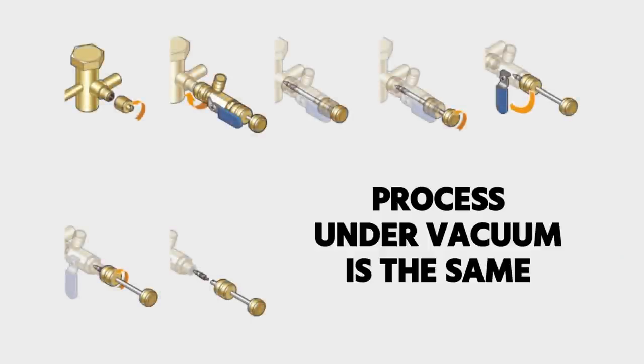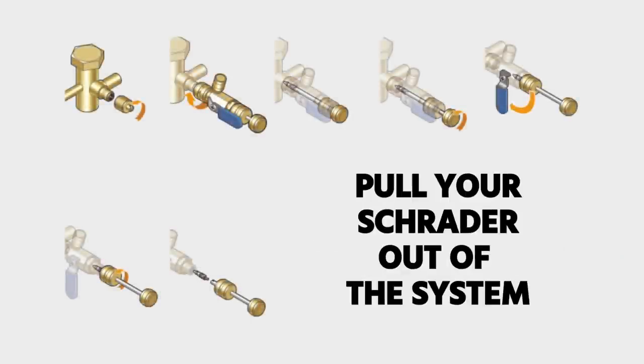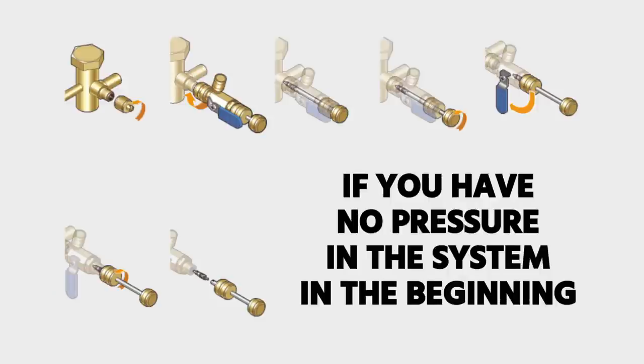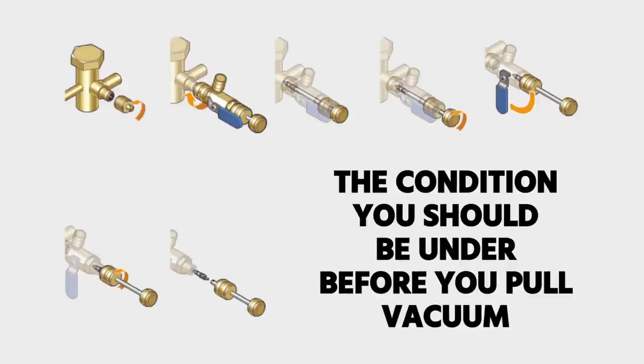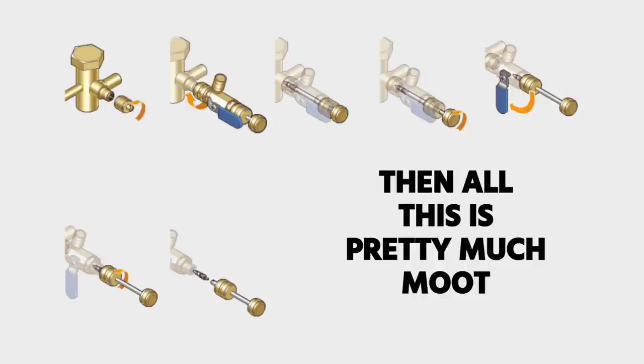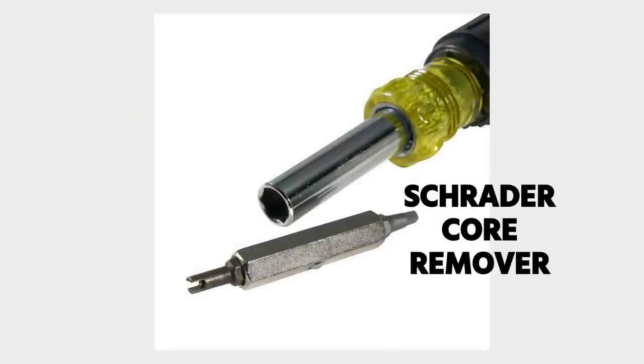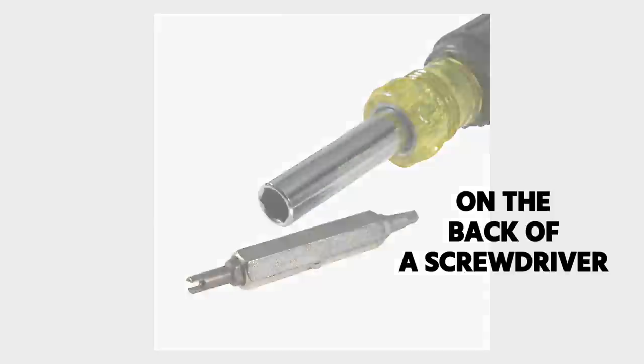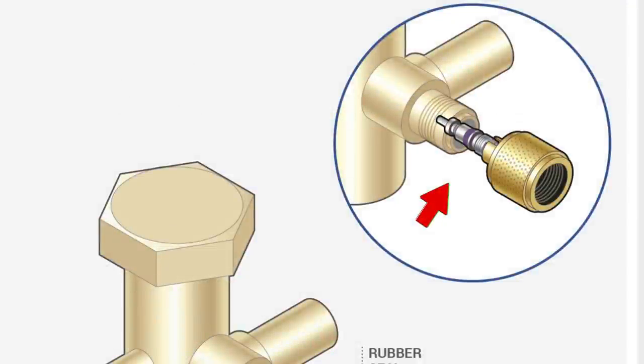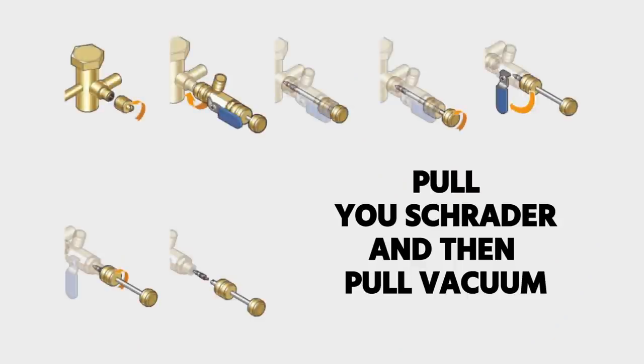The process under vacuum is the same. You're going to pull your Schrader out of the system. If you have no pressure in the system to begin with, which is the condition you should be under before you pull the vacuum anyway, then all this is pretty much moot. You could really just use a Schrader core remover on the back of your screwdriver or on the back of your cap here, like shown. Some of these caps have a Schrader core remover right on the cap itself, and you're going to pull that Schrader out, and then you're going to pull your vacuum.